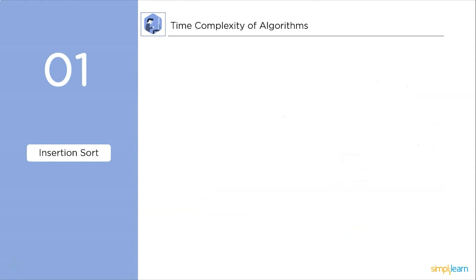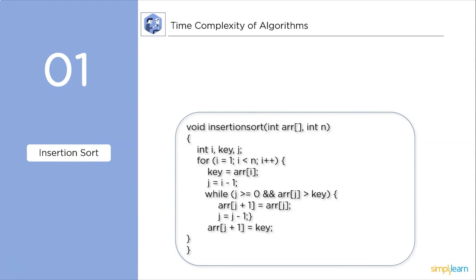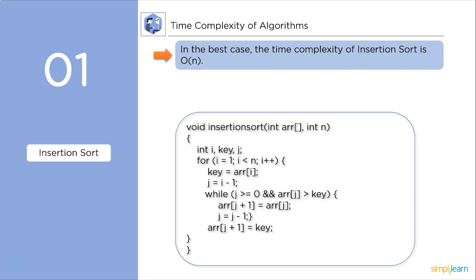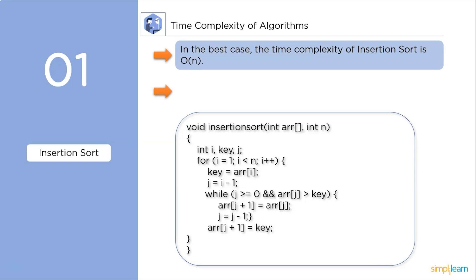First up, insertion sort. As you can see in this code, we are using nested loops. So in the worst case, its complexity comes out to be O(n²). In the best case scenario, the complexity will be linear time complexity O(n).